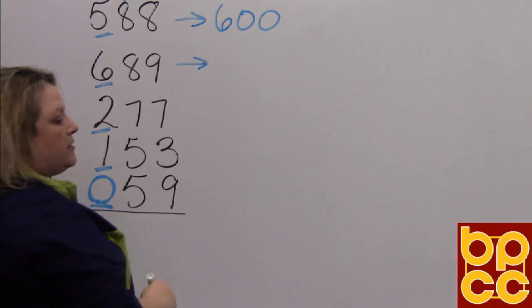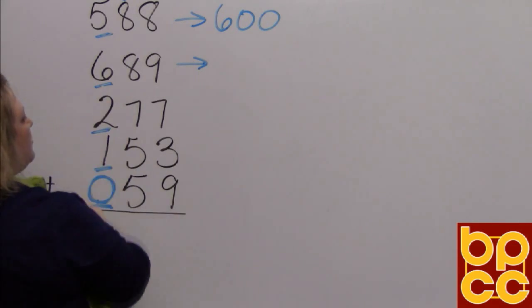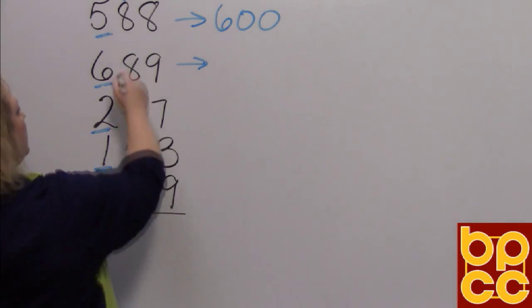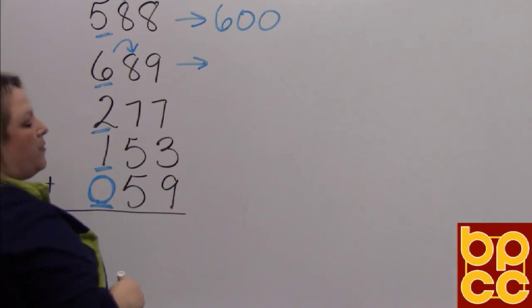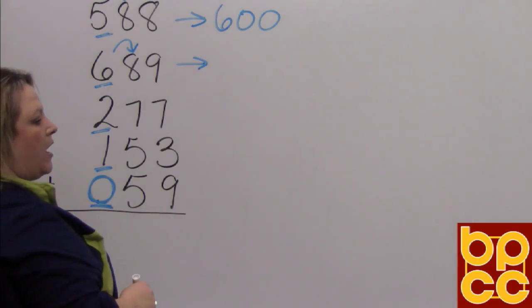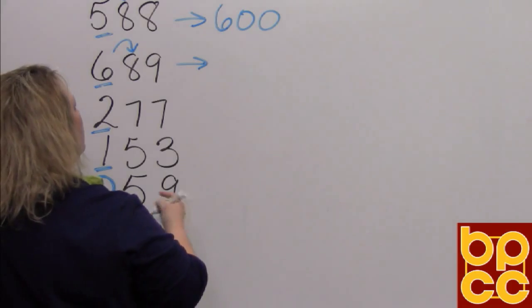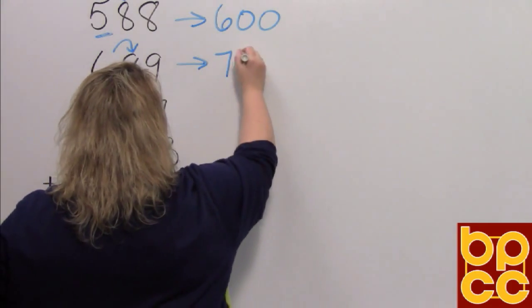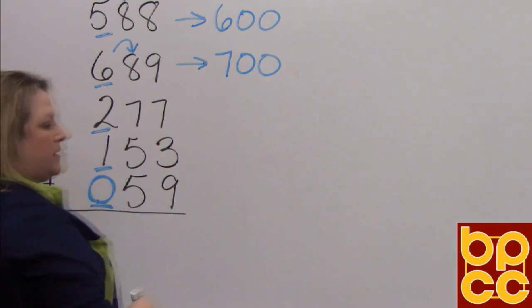Okay, so the next one, I do the same thing. I underline my hundreds digit, which is a six. I look next door. My number next door is an eight, which is five or higher. So I'm going to add one more. So my six rounds up to a seven, and the digits behind it drop to zeros.